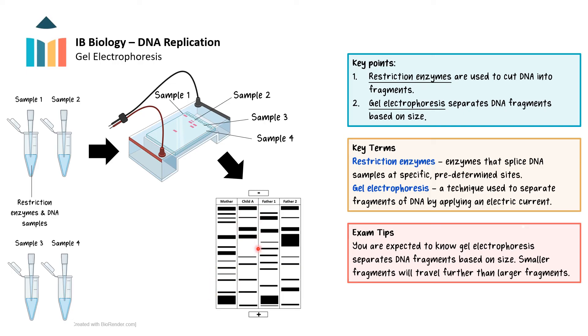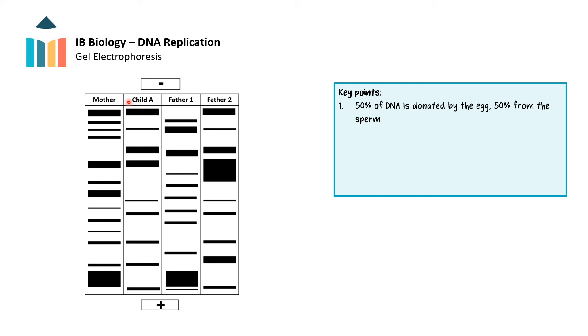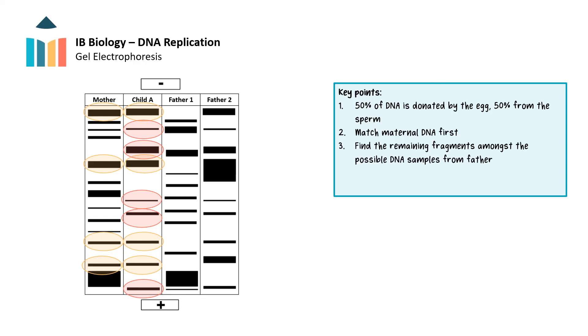We can compare the fragment patterns for each sample. Individuals which share a larger number of fragments are more likely to be related. A child inherits 50% of their genetics from their biological egg donor, the other 50% from their biological sperm donor. In these bands, we can see where child A has the same DNA sequences in common with their egg donor or mother. The other DNA the child has should come from the sperm donor or father. We can see that father number two has the unmatched bands in common with the child, making him almost certainly the sperm donor for child A.